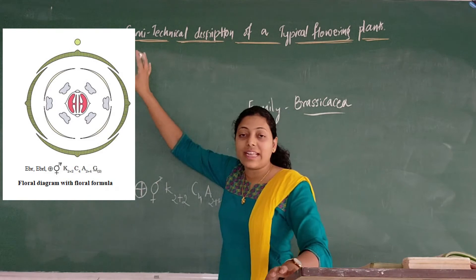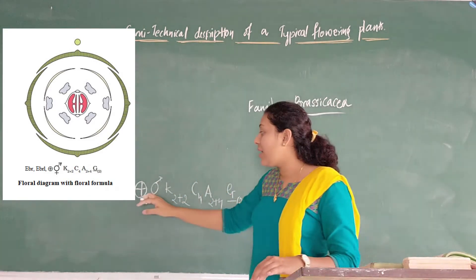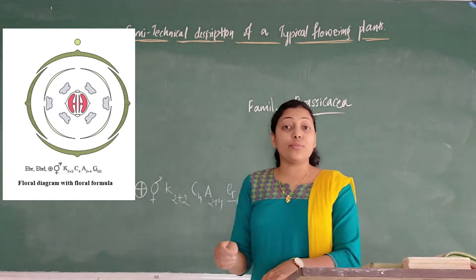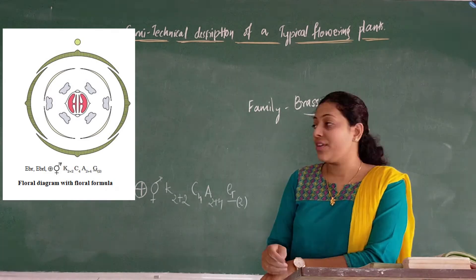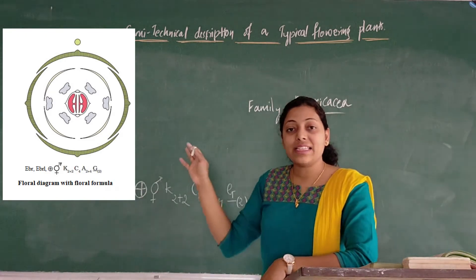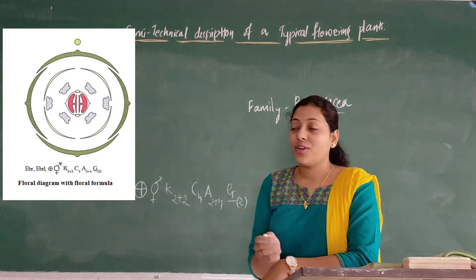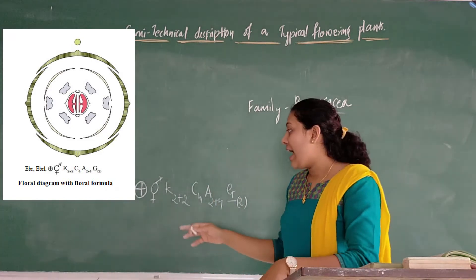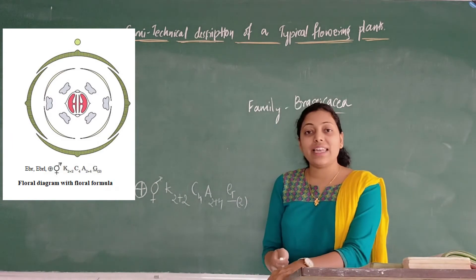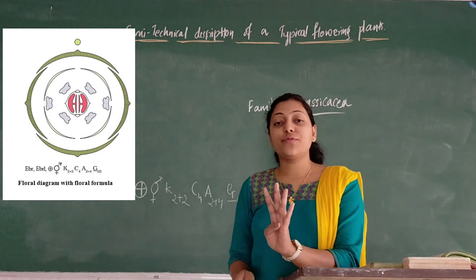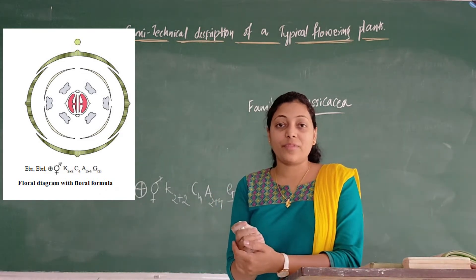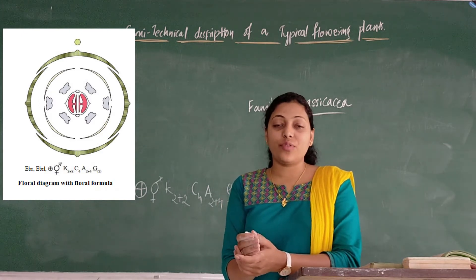I will draw a floral diagram and you can have a thorough look. Here the plus mark with a circle indicates it is actinomorphic — that is, it has radial symmetry. The flower of the mustard plant, family Brassicaceae, has radial symmetry. You can view the radial symmetry here, and then it is a bisexual flower. K stands for calyx; calyx is 2 plus 2, that is 4 sepals, but those are not united with each other — polypetalous condition.